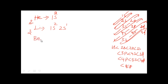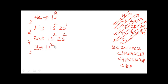For beryllium (Z=4): 1s² fills 2 electrons, balance 2 electrons go to 2s. 2s maximum is 2, so 2s² is filled. Configuration: 1s² 2s². For boron (Z=5): 1s² 2s² fills 4 electrons, balance 1 electron goes to 2p. Configuration: 1s² 2s² 2p¹.